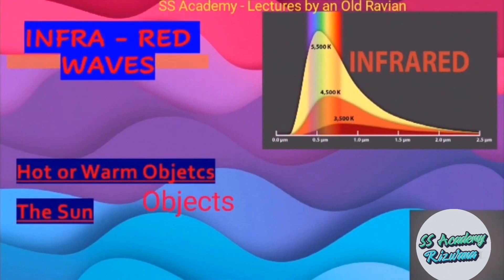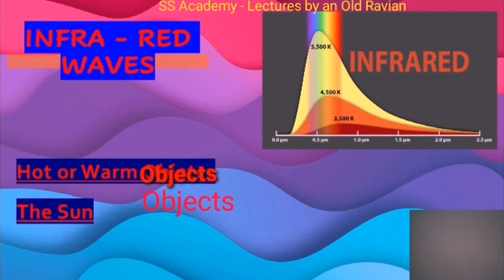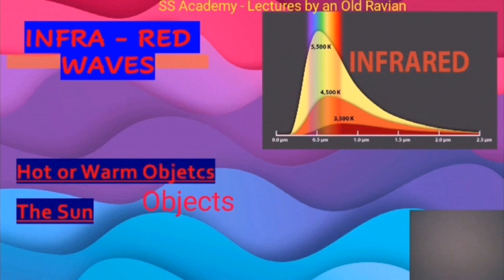Now, infrared waves. Infrared waves are produced by hot or warm objects or by the sun. They are detected by photographic films, by thermometers with a blackened bulb that absorbs radiation causing temperature to rise, and in photoelectric materials. Infrared waves are used in night vision, in TV and radio remote controls, and in lamps.